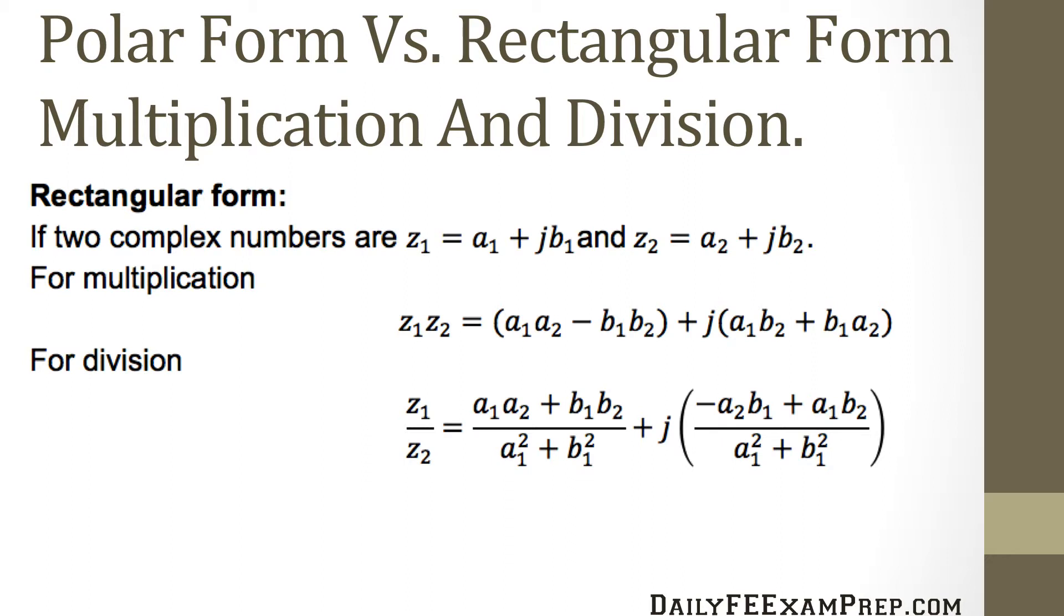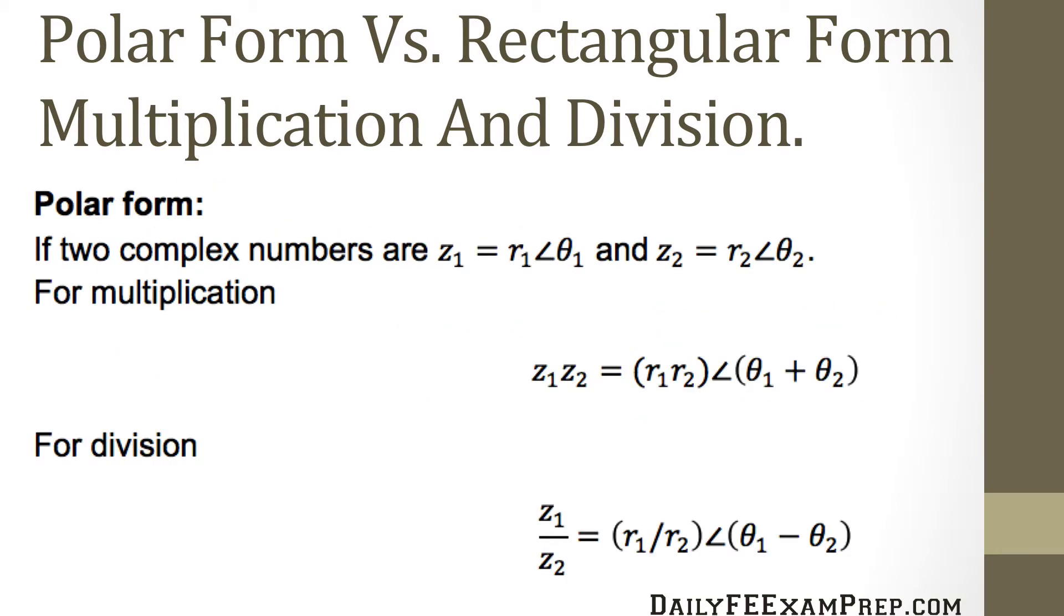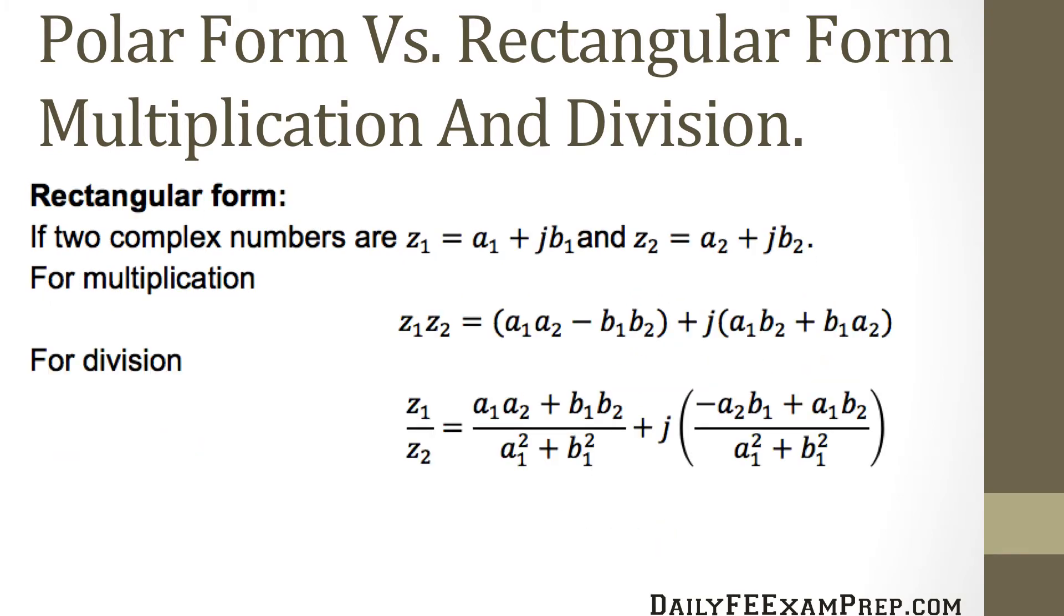For division, z1 divided by z2 equals a1a2 plus b1b2 divided by a1 squared plus b1 squared plus j times minus a2 times b1 plus a1 times b2 divided by a1 squared plus b1 squared. That was pretty complicated in rectangular form, which is why we push towards polar form for multiplication and division.